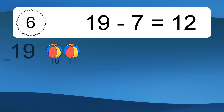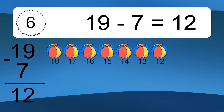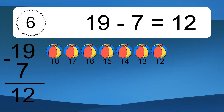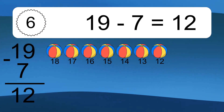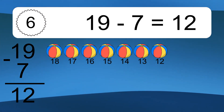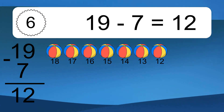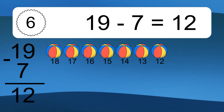19 minus 7 equals 12. Let's count it: 18, 17, 16, 15, 14, 13, 12.